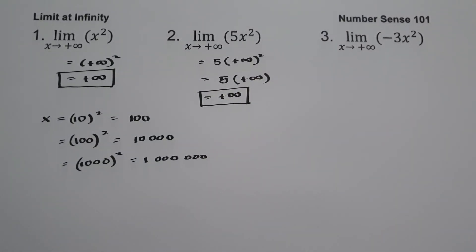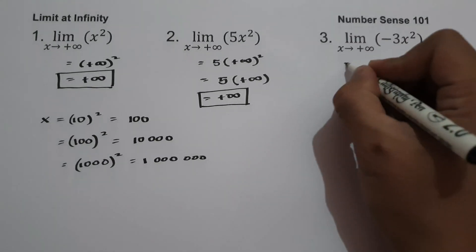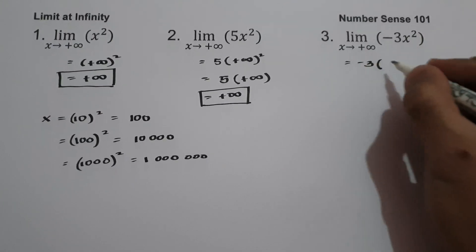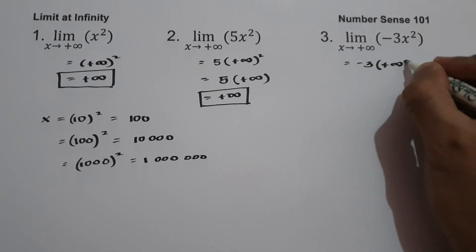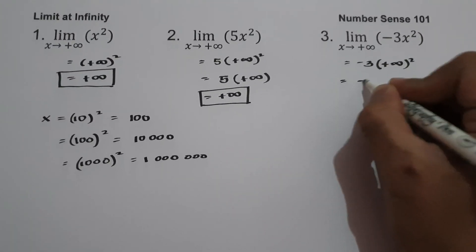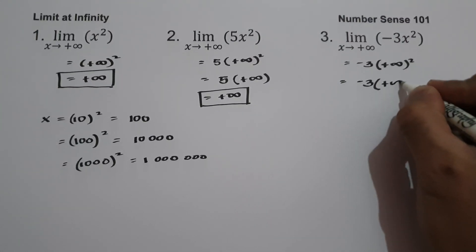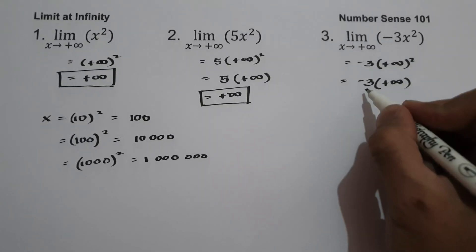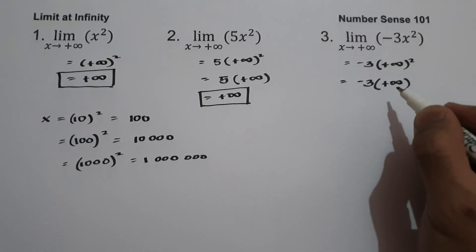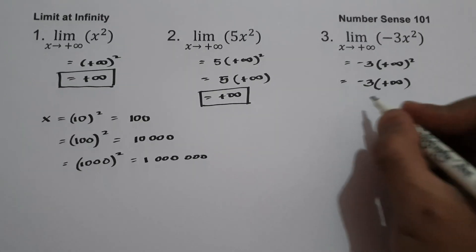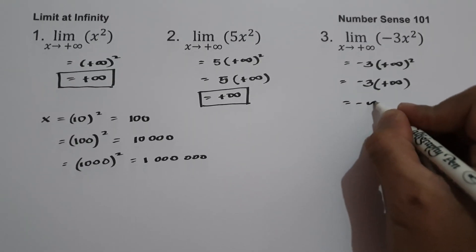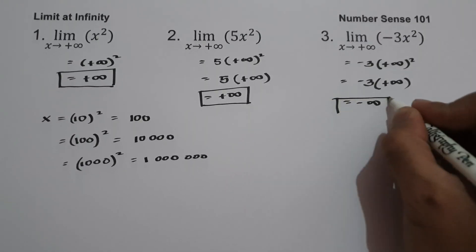For example number 3, what is the limit of negative 3x squared as x approaches positive infinity? We have negative 3 times positive infinity squared. Positive infinity squared is positive infinity. Negative 3 multiplied by positive infinity: negative times positive is negative, so the answer is negative infinity.